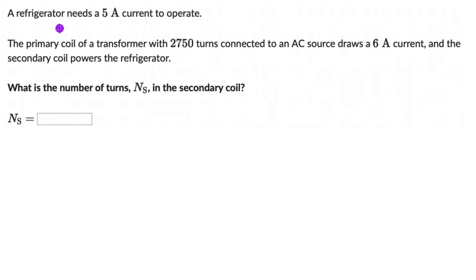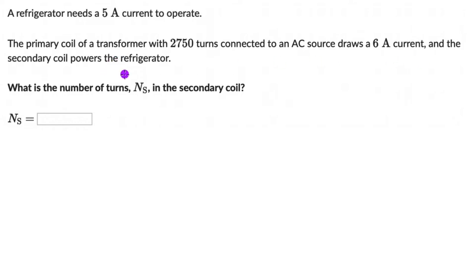Let's move on to our next question. Here we have a refrigerator which needs 5 amperes of current to operate. The primary coil of a transformer with 2750 turns is connected to an AC source that draws 6 amperes of current, and the secondary coil powers the refrigerator. The question is to figure out the number of turns in the secondary coil. Attempt this one on your own first.